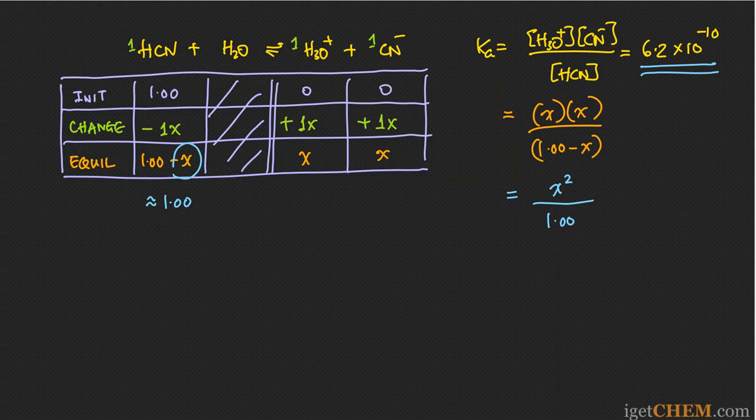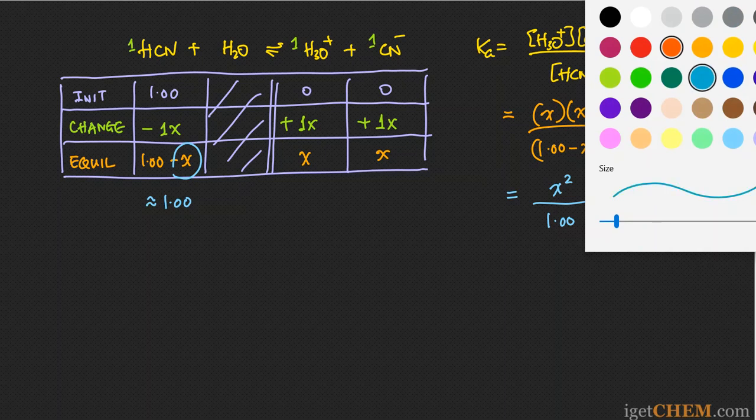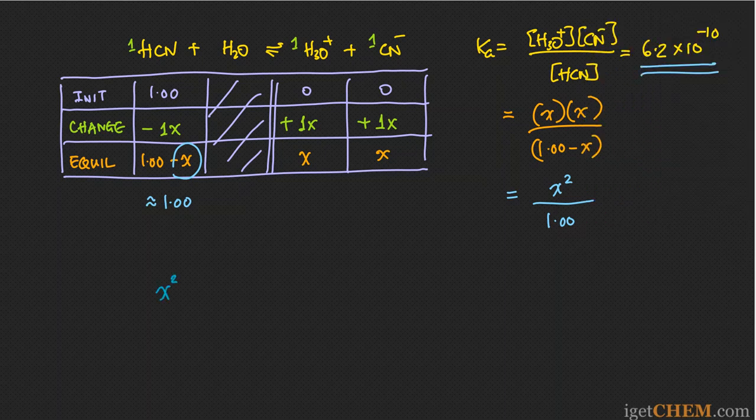And that is all equal to 6.2 times 10 to the minus 10. And that avoids having to use the quadratic formula. The problem is now really simple. You can basically just solve for x. So in this case, you see that x squared is equal to 1.00 molar multiplied by 6.2 times 10 to the minus 10. So you can just take the square root of the right side, and that should give you x. And finally, you will see that x comes out to be 2.5 times 10 to the minus 5.